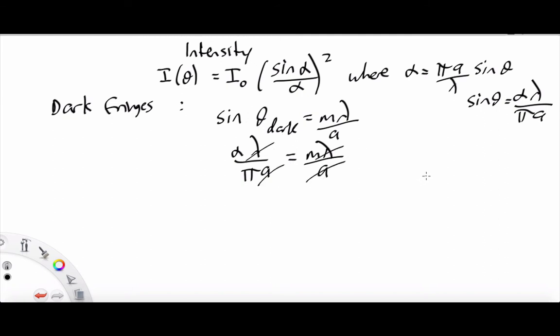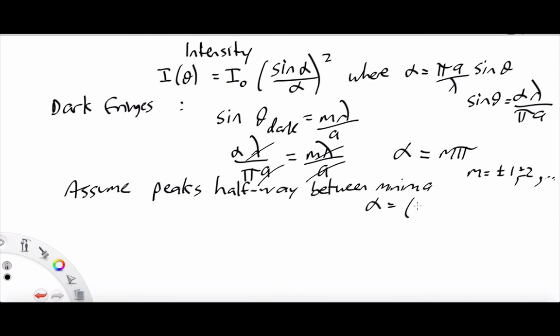We end up with alpha equals M pi, where M is plus or minus 1, 2, etc. So we assume that the peaks are halfway between minima. In other words, where alpha equals M plus a half pi.